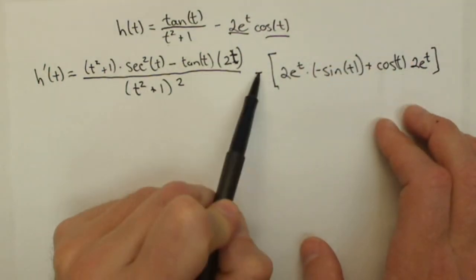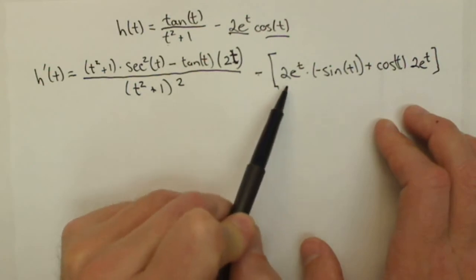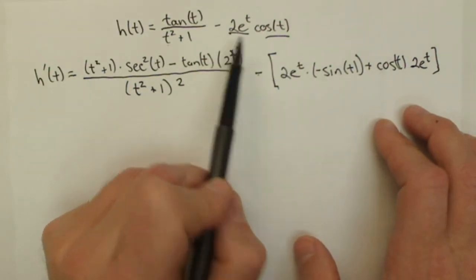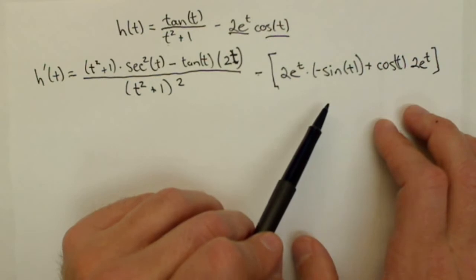One thing to point out, I went ahead and put the negative outside and used these parentheses, which is why I didn't consider it a negative 2e to the t. I'll distribute that in my next step.